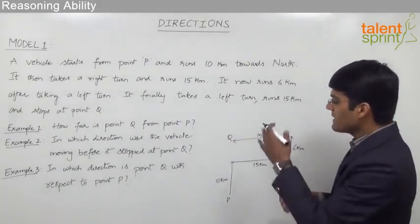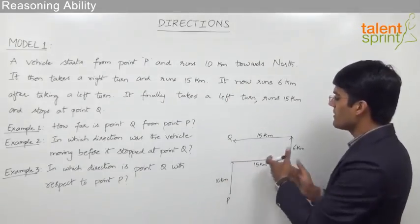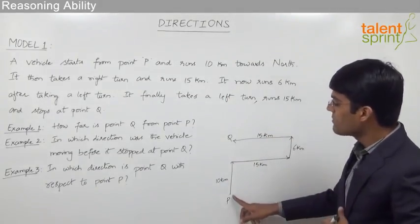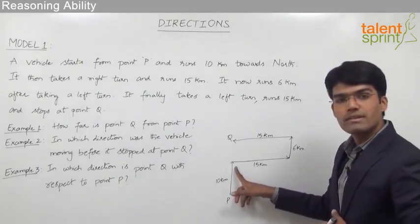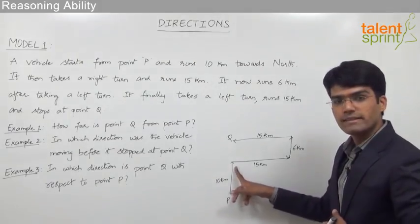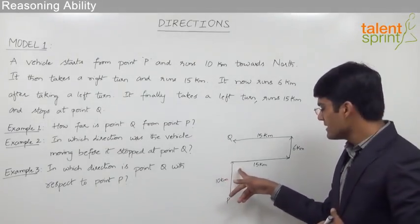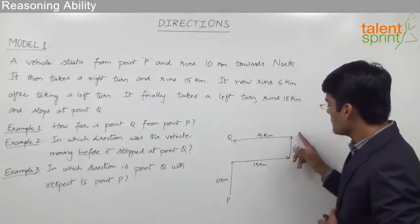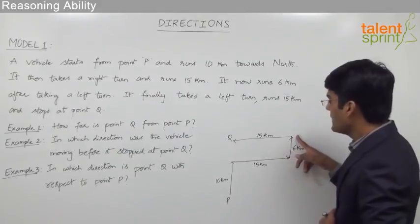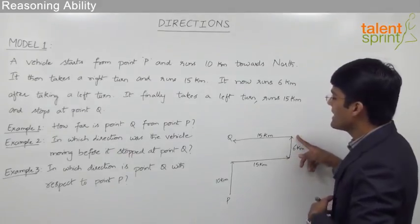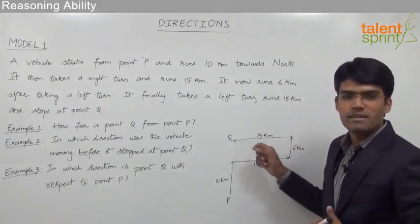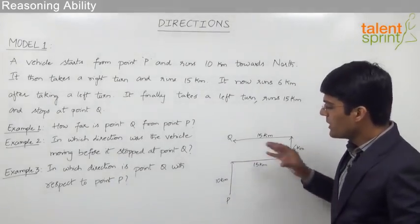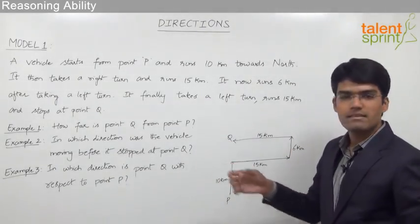So as given in the question, we have traced the movement of the vehicle. It starts from point P, runs 10 kilometers towards north, takes a right turn and runs 15 kilometers, takes a left turn and moves 6 kilometers, and finally takes another left turn and runs 15 kilometers to stop at point Q.